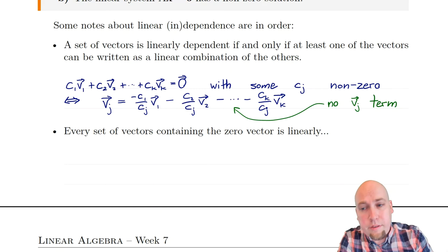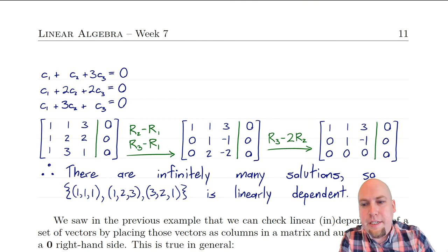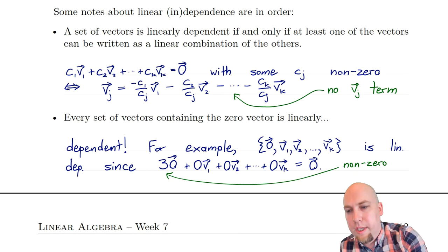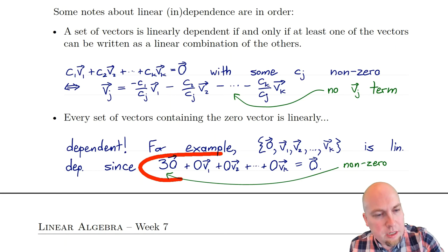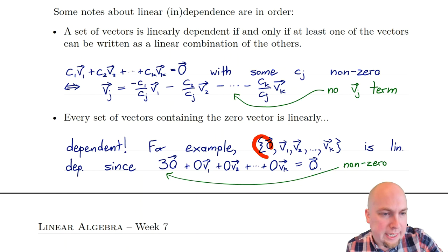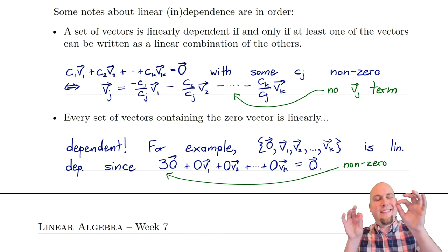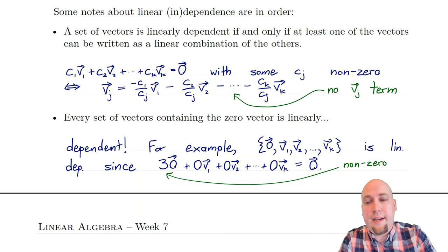Another useful fact: if a set contains the zero vector, no matter what else is in that set, it is always linearly dependent. For example, given the zero vector and k other vectors, you can put a coefficient of 3 in front of the zero vector and zeros in front of all the others. That gives a non-trivial linear combination (since the coefficient 3 is non-zero) that equals the zero vector. So any set containing the zero vector is linearly dependent.